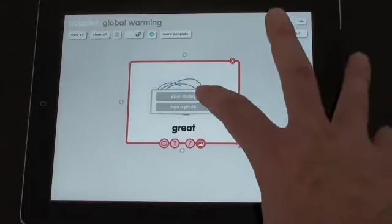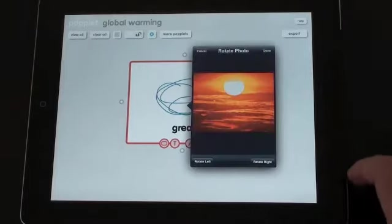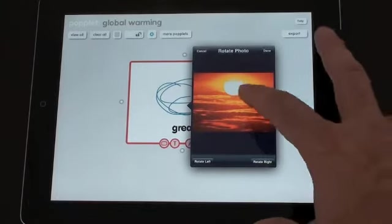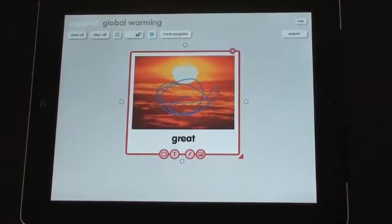And the last option looks like a sort of landscape photo picture. If you click on that, you can actually open up your camera library and insert an image from there. It gives you options to rotate the image first. Click done and that inserts into the Poplet.